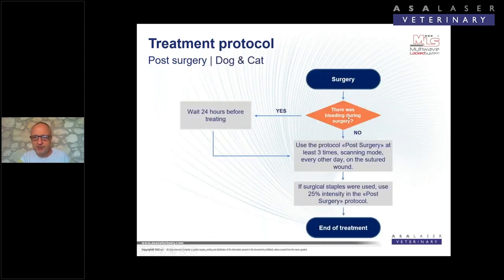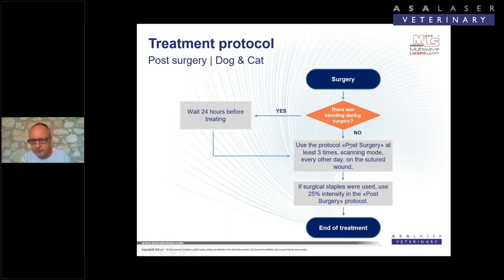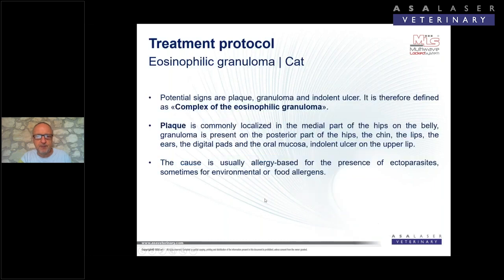If there was bleeding during surgery, wait 12 hours before treating. Use the post-surgery protocol at least three times in scanning mode every other day on the suture. If staples were used, reduce intensity to 25 percent — moving from four joules per centimeter squared at 100 percent to one joule per centimeter squared at 25 percent, applying only one quarter of normal emission. You get the same results for pain, swelling, edema, and regeneration without overheating the staples.